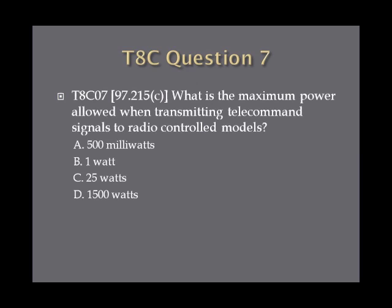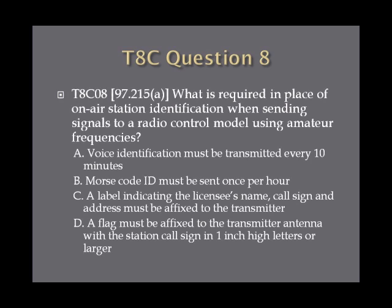Question seven: What is the maximum power allowed when transmitting telecommand signals to radio-controlled models? A, 500 milliwatts. B, one watt. C, 25 watts. Or D, 1500 watts. Question eight: What is required in place of on-air station identification when sending signals to a radio-controlled model using amateur frequencies? A, voice identification must be transmitted every 10 minutes. B, Morse code ID must be sent once per hour. C, a label indicating the licensee's name, call sign, and address must be affixed to the transmitter. Or D, a flag must be affixed to the transmitter antenna with the station call sign in one-inch-high letters or larger.